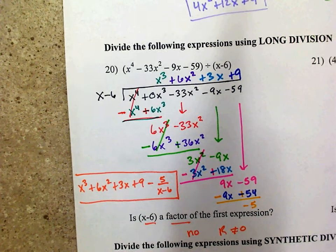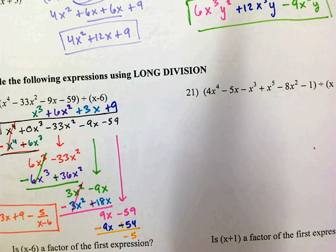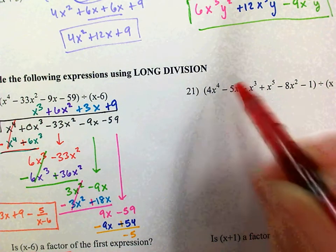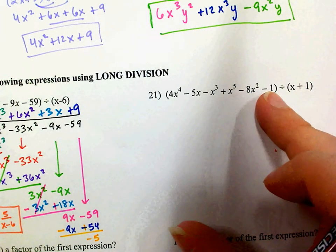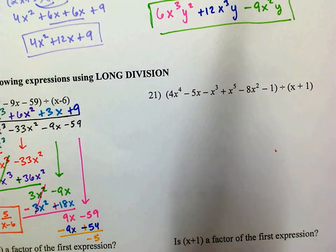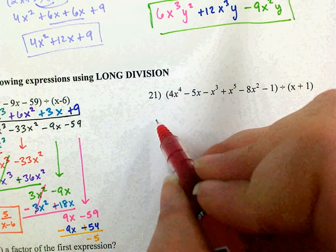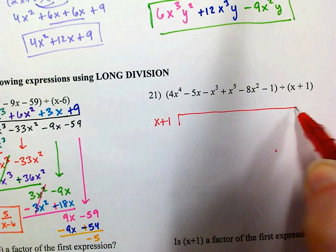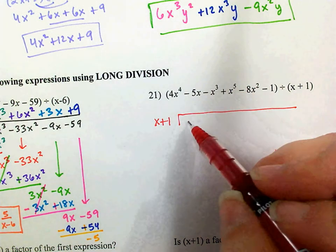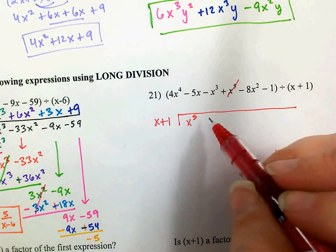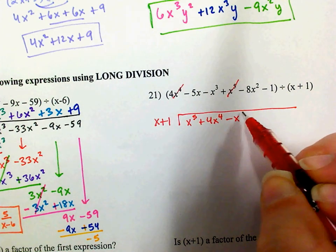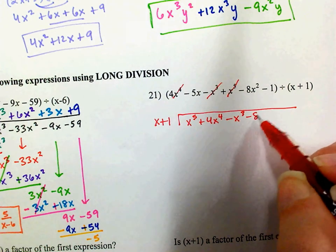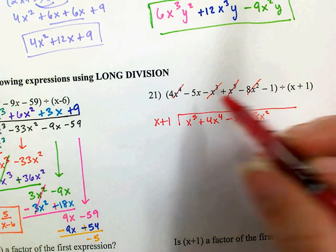Now we'll do 21. You might notice something about this problem: the terms are powers 4, 1, 3, 5, 2, and none — they're not in order. So I need to put them in order. I'll put x plus 1 on the outside, then arrange the dividend: highest power first — x to the 5th, then 4x to the 4th, then x cubed, then x squared, then the linear term, then the constant.